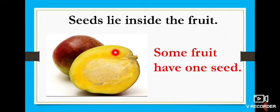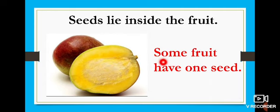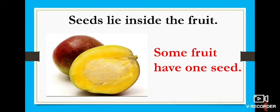First we learned about flowers, then about fruit, and now we are going to see about seeds. What fruit is this? You all like to eat this. Mango. Now in the mango fruit, where is the seed? It is inside the fruit. How many seeds can you see in a mango? Very good. Mango fruit has only one seed. Some fruits have one seed — S-O-M-E F-R-U-I-T H-A-V-E O-N-E S-E-E-D. Inside the mango fruit we can see only one seed.